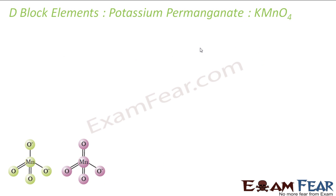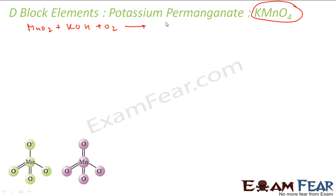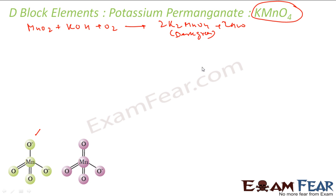The next important d-block compound is potassium permanganate, KMnO₄. It is prepared by fusion of MnO₂ with an alkali metal hydroxide and an oxidizing agent. You take MnO₂ with potassium hydroxide and oxygen, and you get 2K₂MnO₄ plus water. This product is dark green in color.